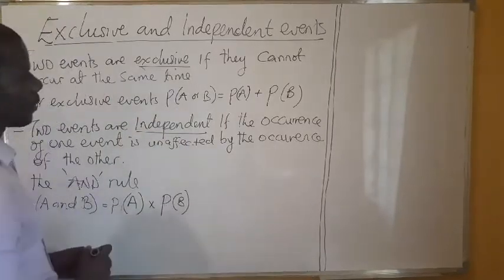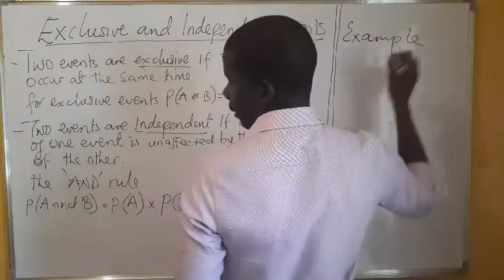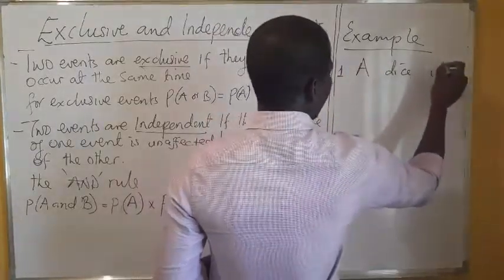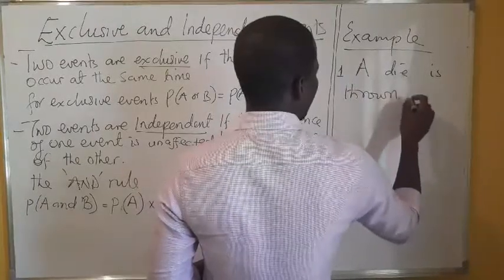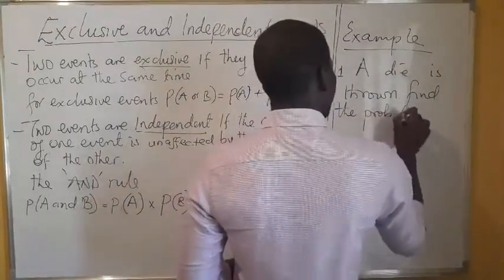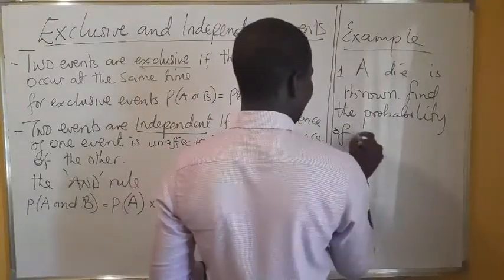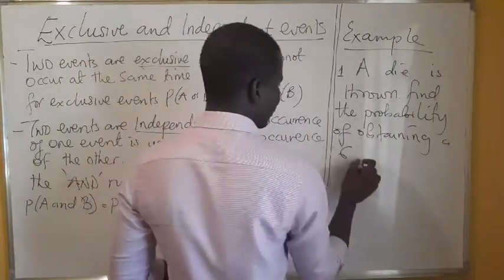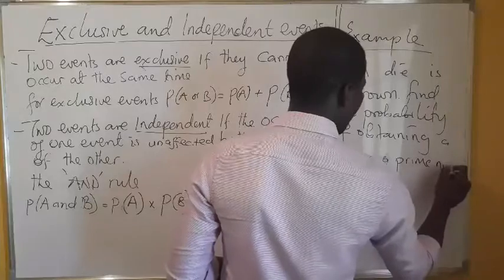Let me give an example under the first one. A die is thrown. Find the probability of obtaining a six or a prime number.